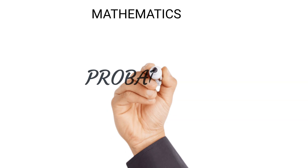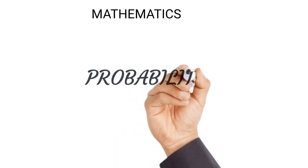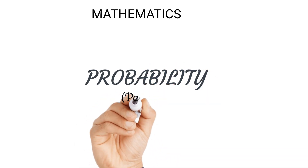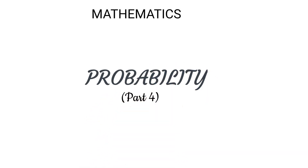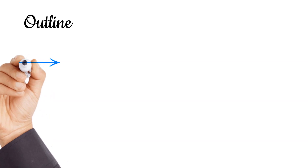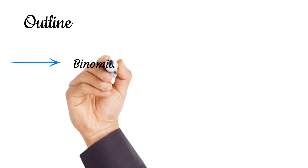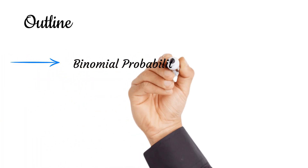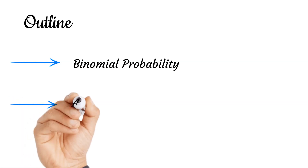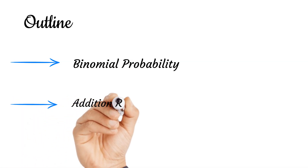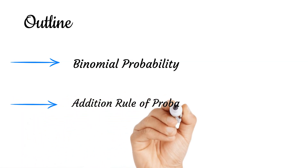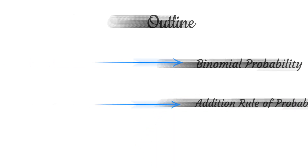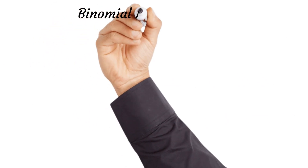Mathematics probability, part four. We're going to look at the following outline: binomial probability, and then we'll look at the addition rule of binomial probability. Let's start with binomial probability.